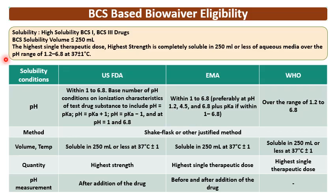Considering the solubility criteria, the BCS volume is 250 ml. The highest strength or highest dose should be soluble in 250 ml or less of aqueous media over the pH range of 1.2 to 6.8 at 37°C. For the USA (USFDA), the pH range is 1 to 6.8 and also near pKa of the drug — specifically at pH = pKa + 1, pH = pKa − 1, and at pH 1 and 6.8. This range should be covered for solubility studies to prove high solubility.